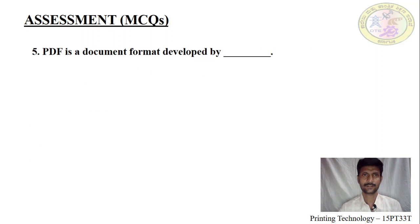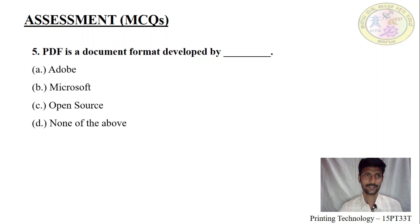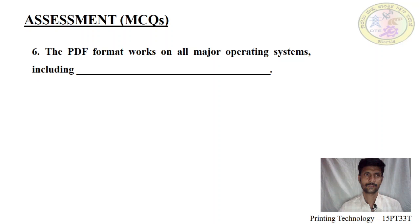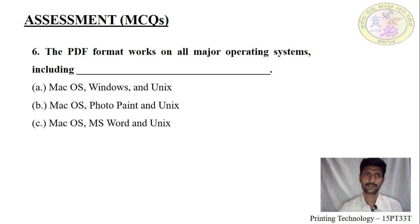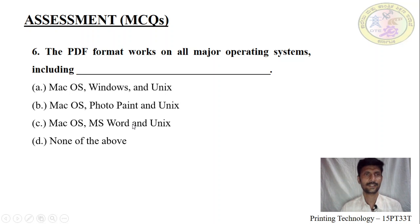A PDF is a document format developed by which company: Microsoft, Adobe, or Open Source, or none of the above? The PDF format works in all major operating systems including which? It is clearly an independent device and operating platform. Options: Mac OS, Windows, Unix; or PhotoPaint, Mac OS, Unix; or Mac OS, MS Word, and Unix; or none of the above. Note that PhotoPaint and MS Word are application software, not operating systems.